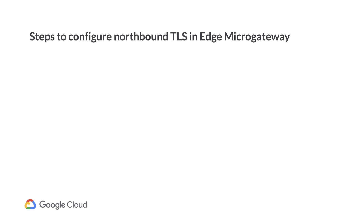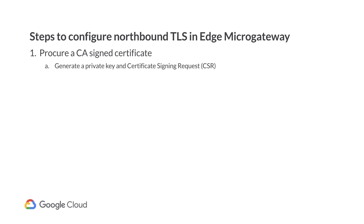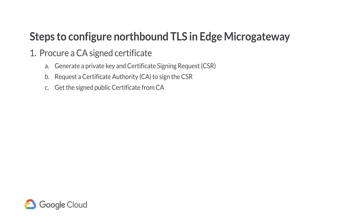Let's now look at the steps involved in setting up one-way TLS on the Edge Micro Gateway. First and foremost, we need to obtain a signed certificate, ideally one that's signed by a trusted CA. To do this, you will first generate a private key and then generate a certificate signing request, or CSR. This CSR will then need to be sent to a certificate authority for signing the actual public key. You can also self-sign the certificate for test and development environments, but it is recommended to use CA-signed certificates in production environments.